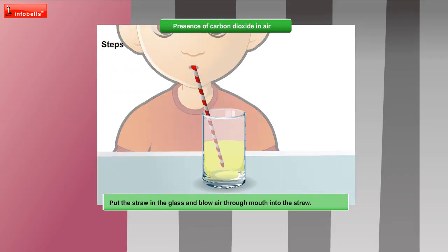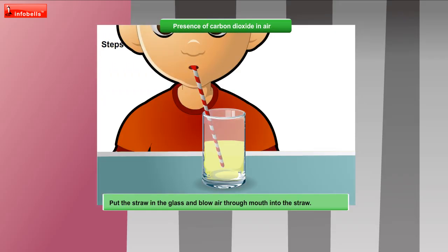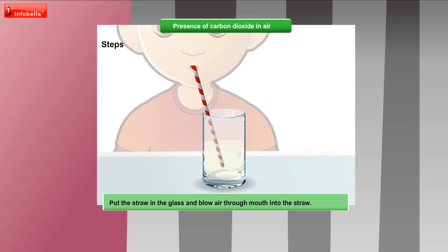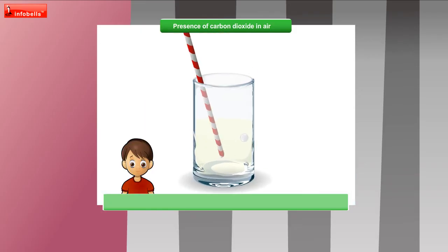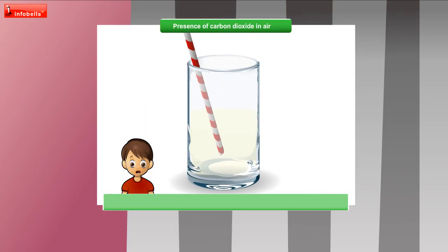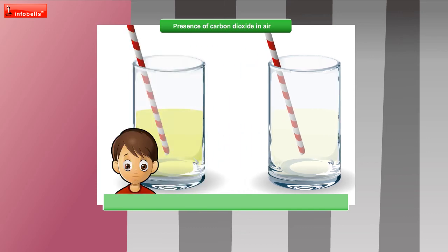Now put the straw in the glass and blow air through your mouth into the straw. Bubbles are formed and the water gets cloudy. See closely. Oh yes! The water looks cloudy.